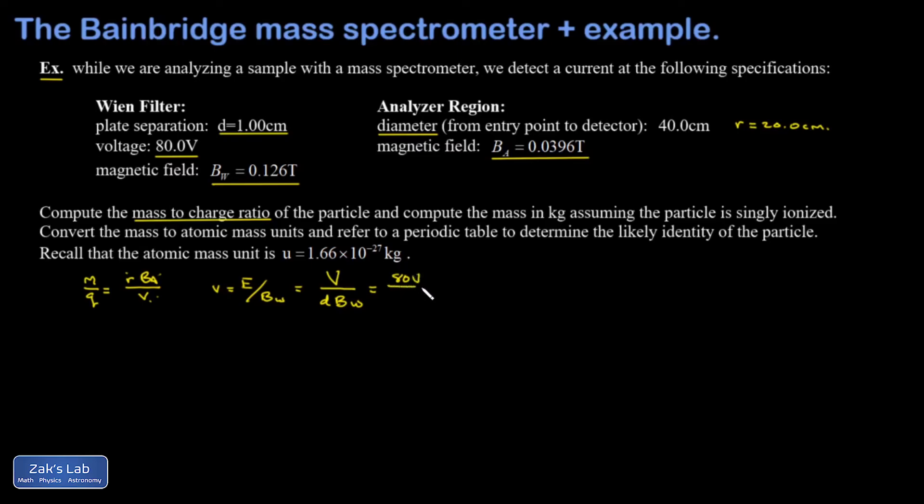That's 80 volts over 0.01 meters for the plate separation, divided by 0.126 Tesla for the magnetic field strength. And I get 6.349 times 10 to the fourth meters per second. Now it looks like I can proceed with the mass-to-charge ratio.